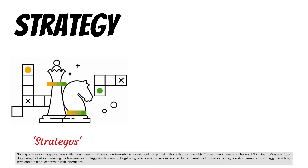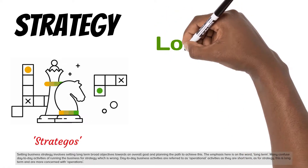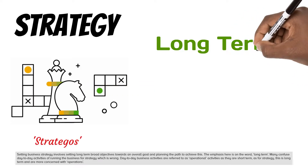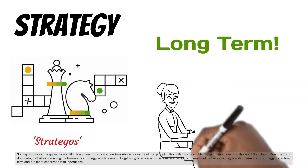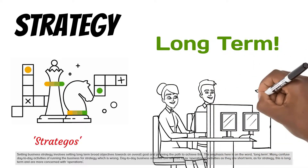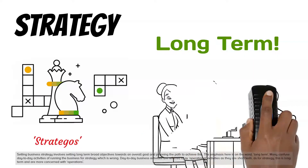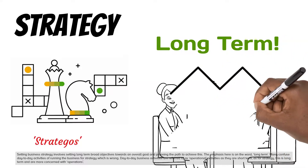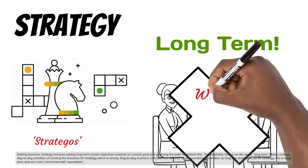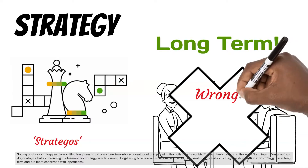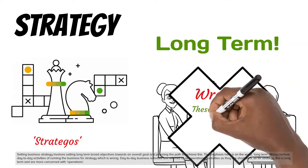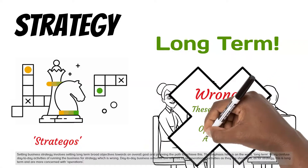Setting business strategy involves setting long-term broad objectives towards an overall goal and planning the path to achieve this. The emphasis here is on the word long-term. Many confuse day-to-day activities of running the business for strategy, which is wrong. Day-to-day business activities are referred to as operational activities as they are short-term; strategy is long-term and is more concerned with broader operations.